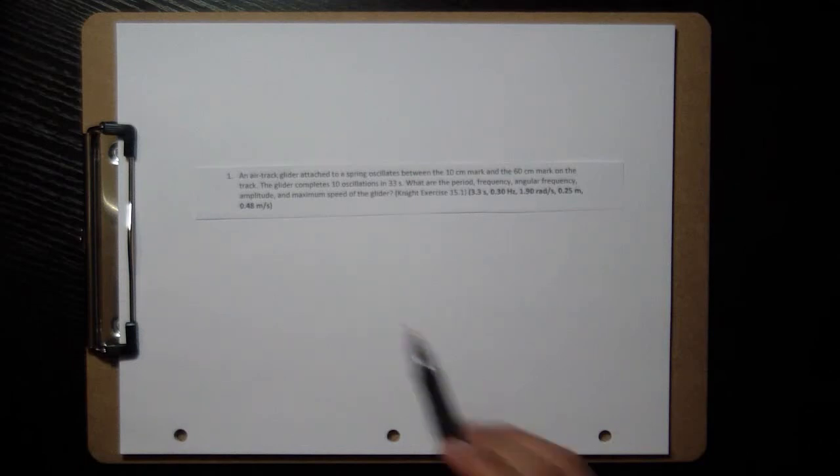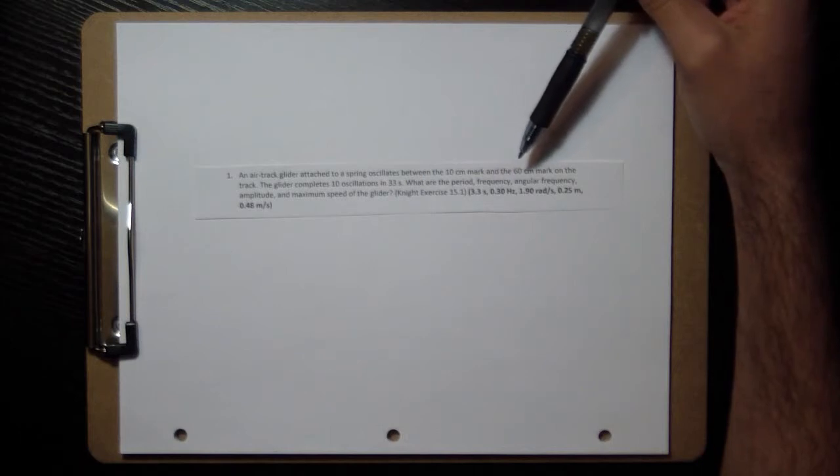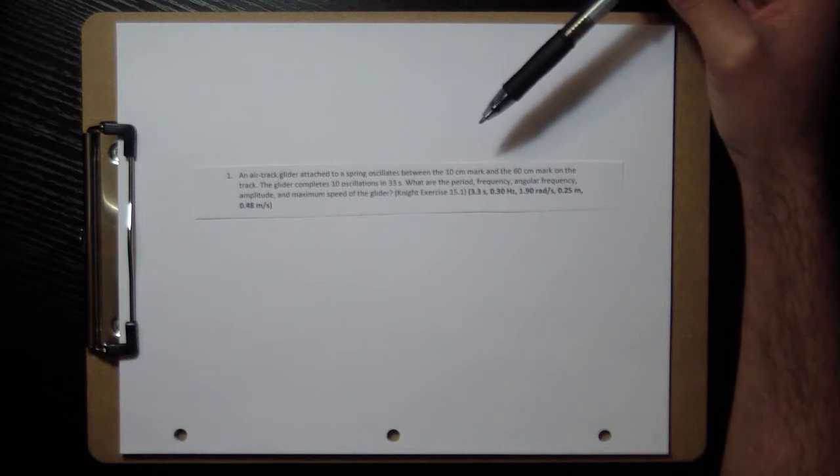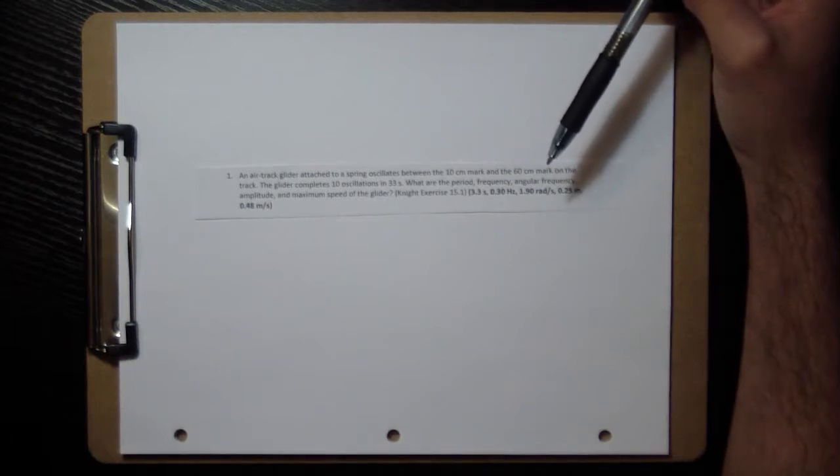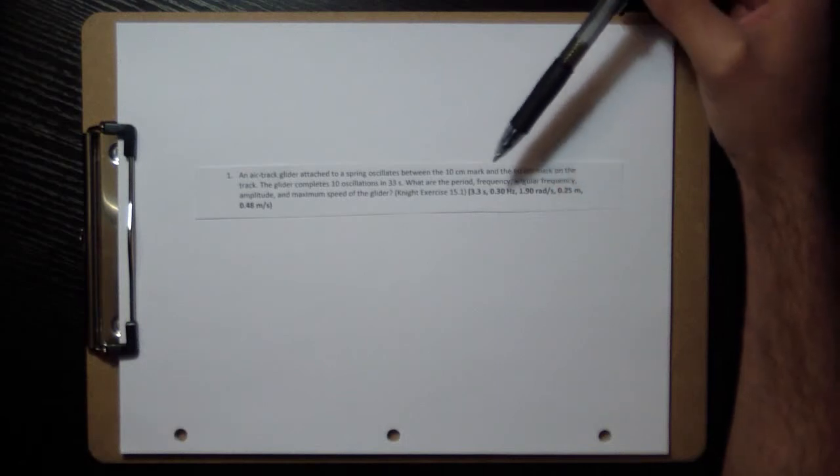Let's look at problem number one. An air track glider attached to a spring oscillates between the 10 centimeter mark and the 60 centimeter mark on the track. The glider completes 10 oscillations in 33 seconds. What are the period, frequency, angular frequency, amplitude, and maximum speed of the glider?